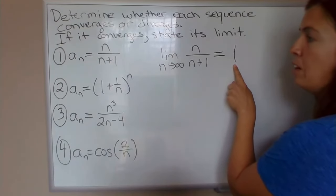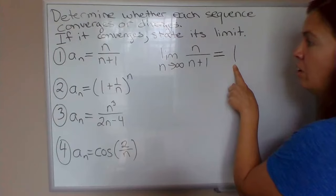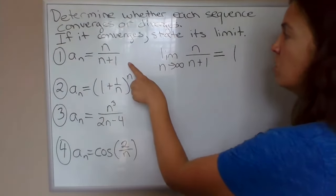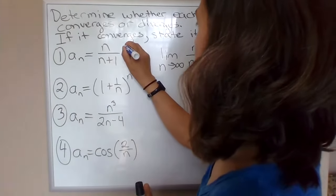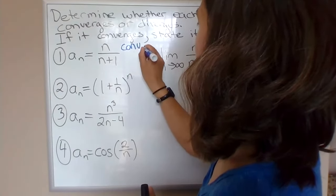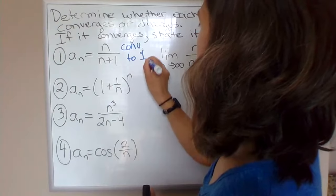So when the limit is a finite number, as it is here, that means that the sequence converges to whatever that value is. So example 1 here converges to 1. That's our answer.